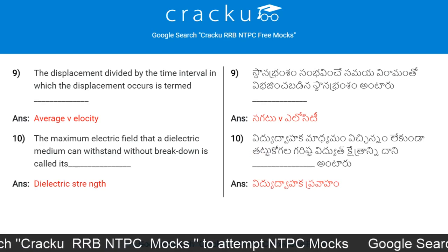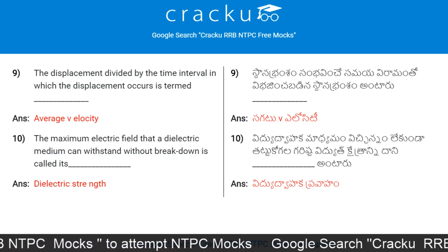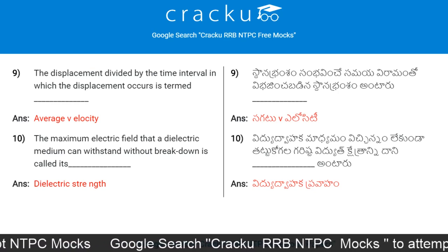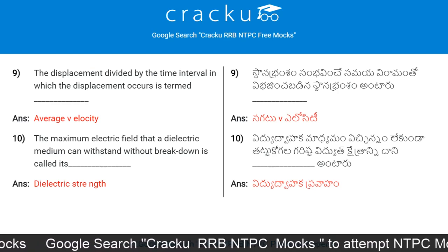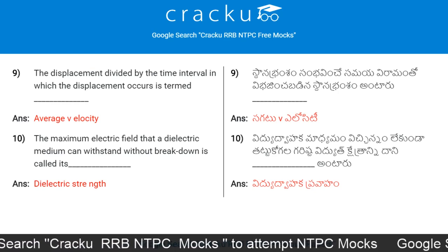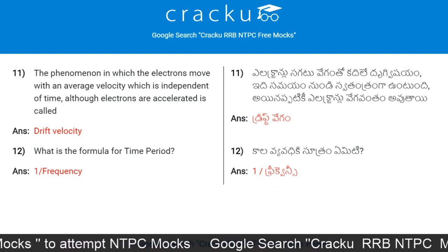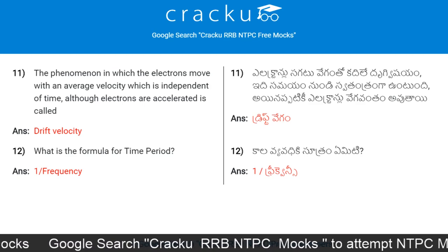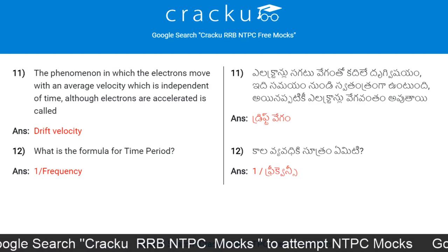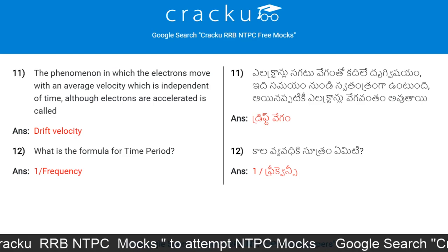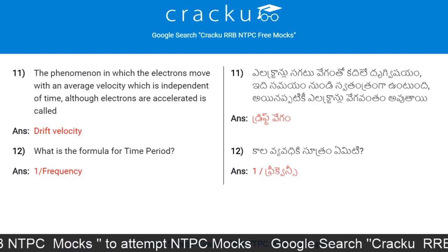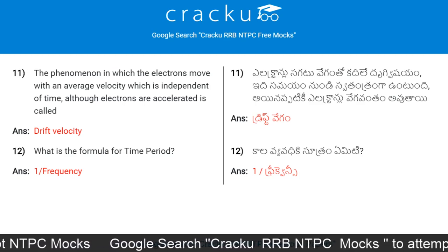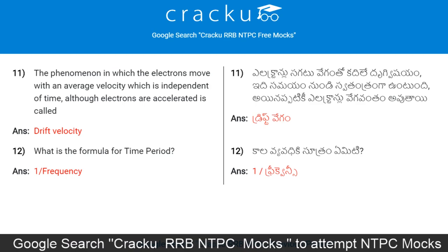The maximum electric field that a dielectric medium can withstand without breakdown is called dielectric strength. The phenomenon in which electrons move with an average velocity independent of time, where all the electrons are accelerated, is called drift velocity.